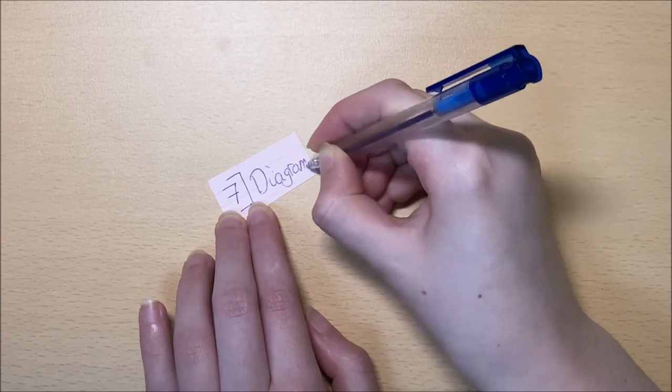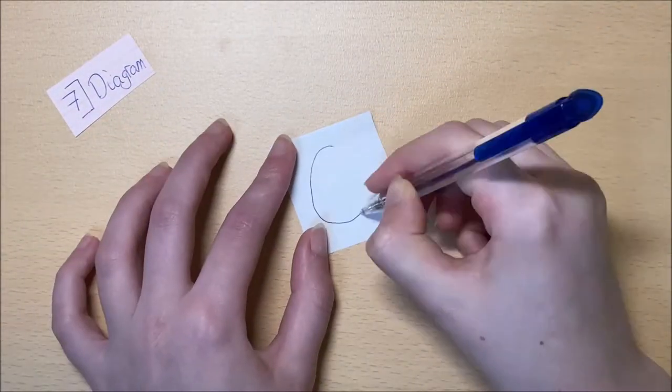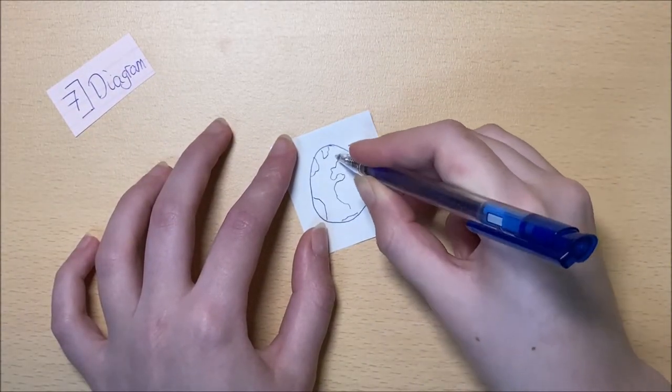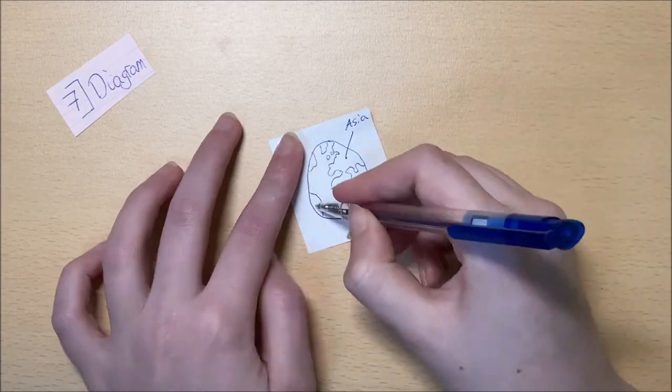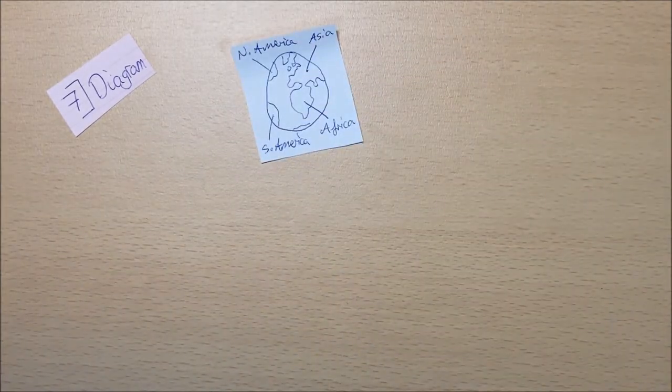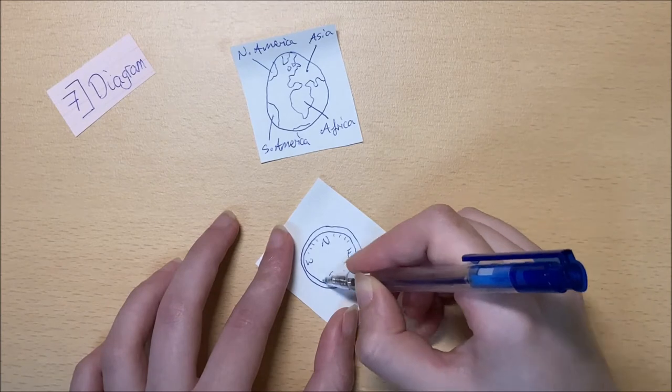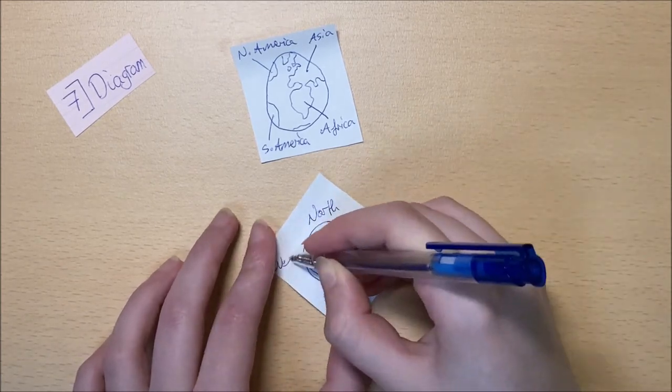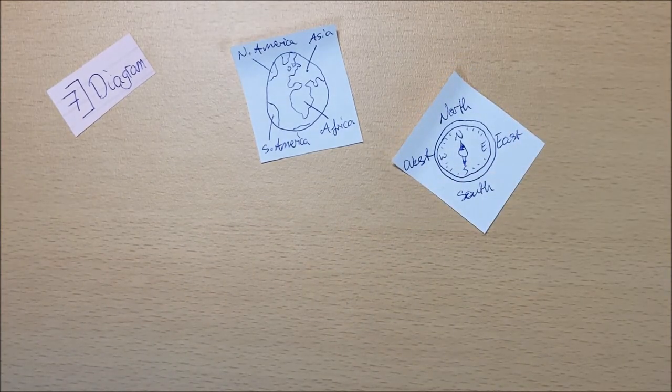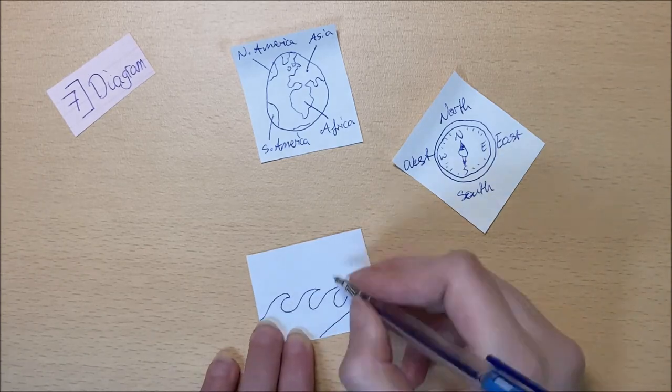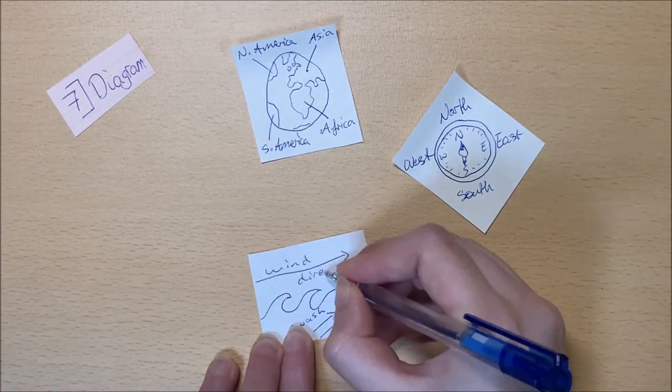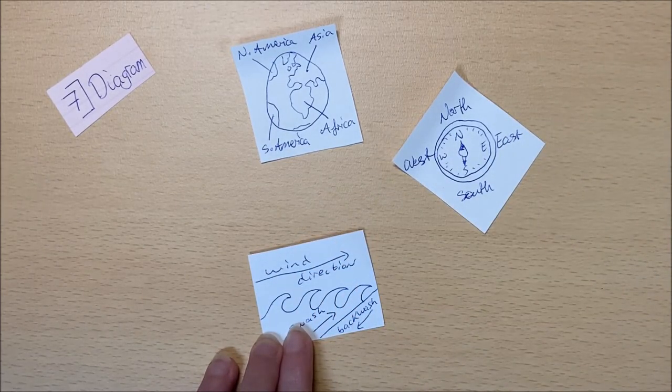Flashcard use number seven is for diagrams. This is incredibly helpful when it comes to subjects such as geography that has a lot of visual learning. So you can have one drawing with the labels on one side of the flashcard, such as with these two examples, but another way of using them is to have a diagram and labels on one side, and then further explain those labels on the back of the flashcard.